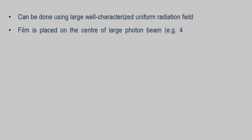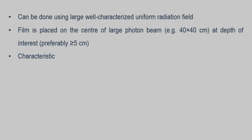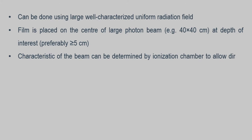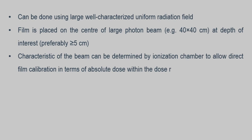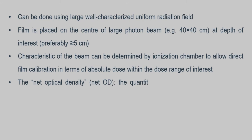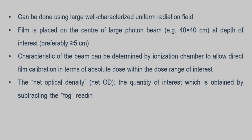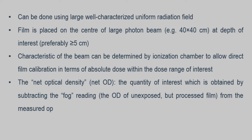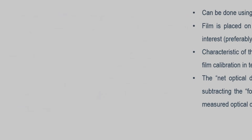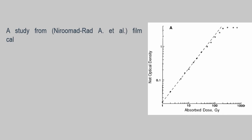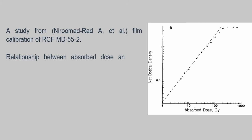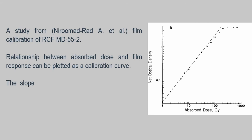Calibration of RCF can be done using a large, well-characterized, uniform radiation field. The film is placed at the center of a flat photon beam, for example 40 by 40 cm, at a depth of interest preferably equal to or more than 5 cm. The characteristics of the beam can be determined by an ionization chamber to allow direct film calibration in terms of absolute dose within the dose range of interest. The net optical density is obtained by subtracting the fog from the measured optical density. A study from Neerumad Rady et al. was done for film calibration of RCF MD-55, and they found that the slope of the calibration curve decreased as dose increased.